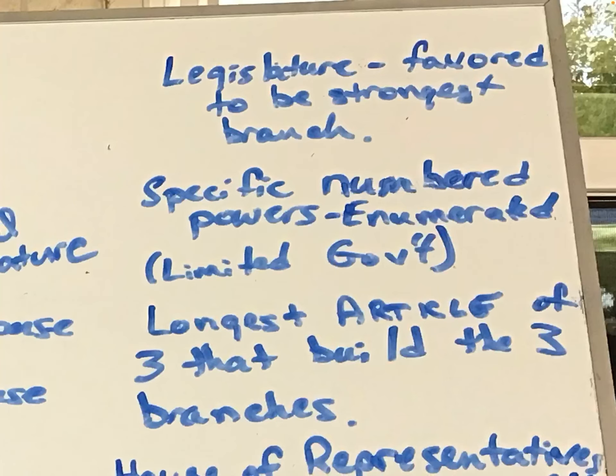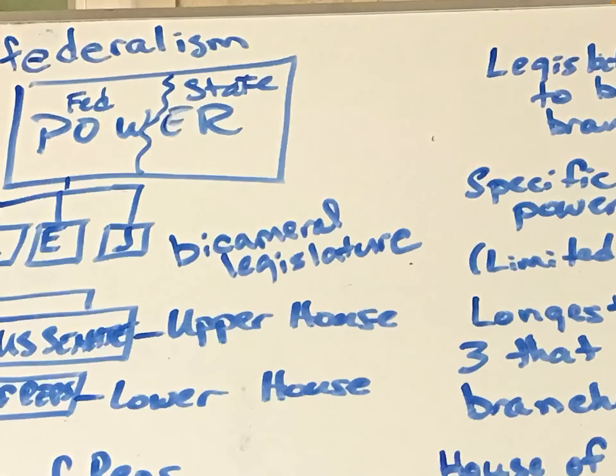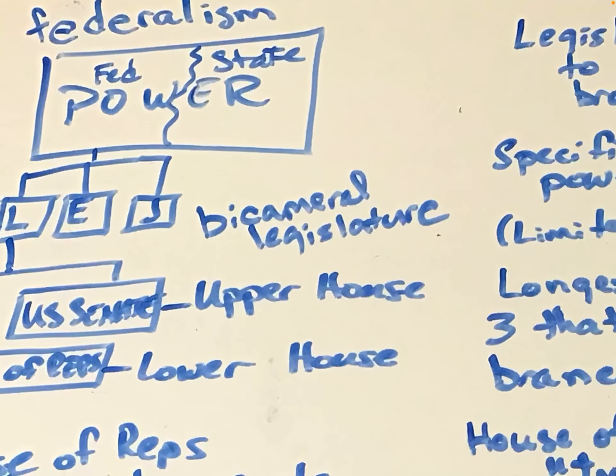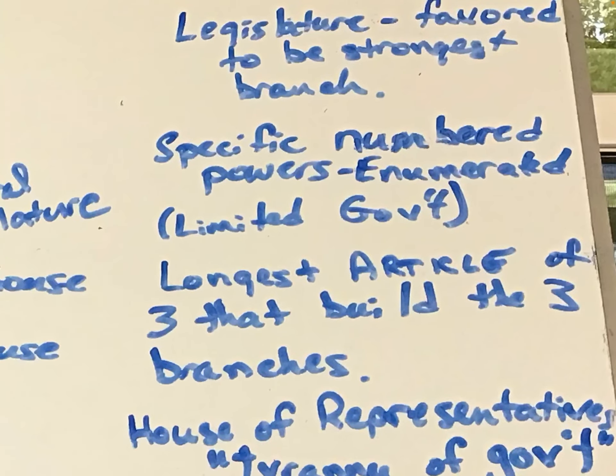In the Constitution, the legislature is drawn out with specific numbered powers — these are called the enumerated powers. Enumerated meaning made into a numbered list: number one, Congress can do this; number two, Congress can do this; and so forth. It's part of the concept of limited government. Article One, which establishes the legislature and its enumerated powers, is the longest article of the three that build the three branches. The legislature was set up to be the most powerful of the three.